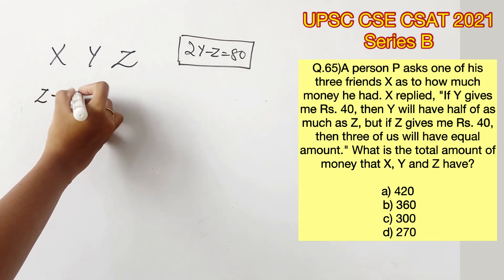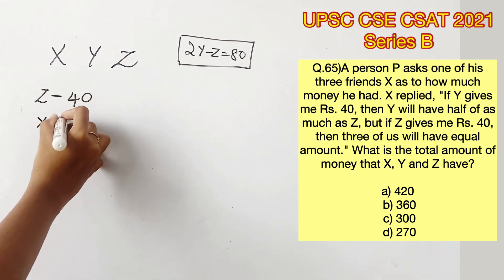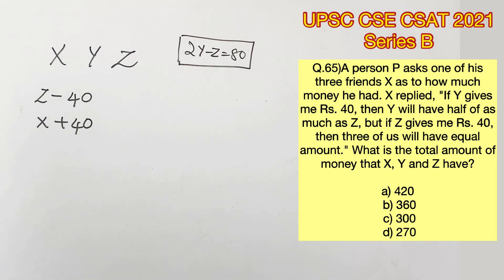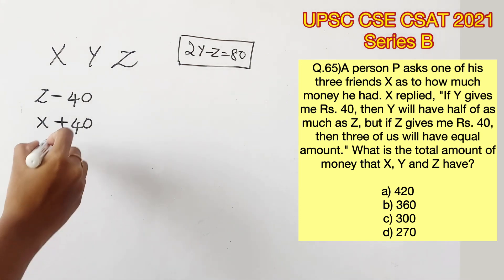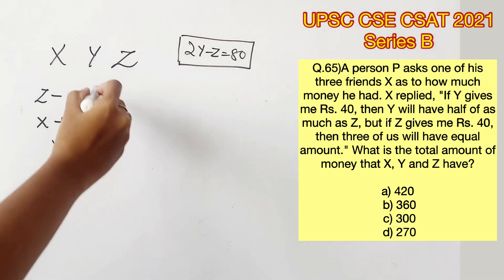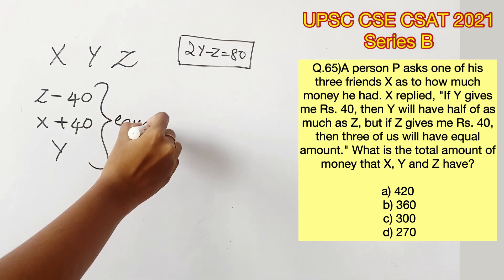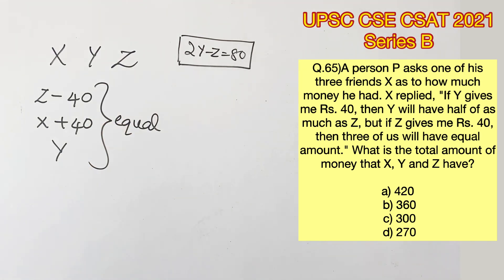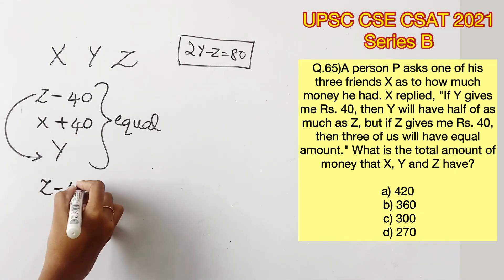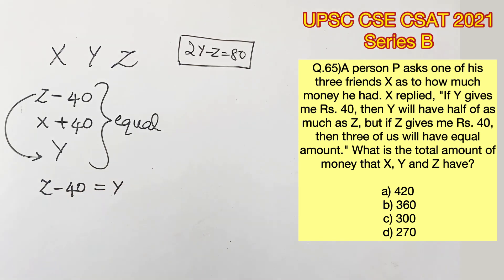Now in the next statement, Z has given 40 rupees to X. So now Z will be depreciated with 40 rupees. X will be gaining 40 rupees and Y will remain the same. The statement also says that now all these three people have equal amounts. Therefore, we can equate Z and Y because we already have an equation which contains these two variables. So Z minus 40 equals Y. So we will obtain a second equation where minus Y plus Z equals 40.